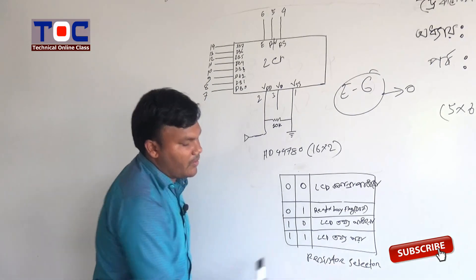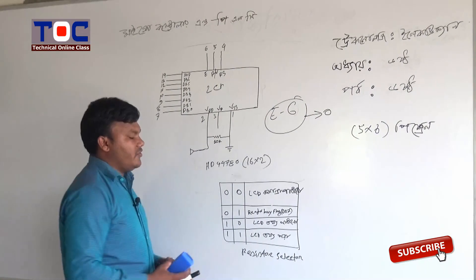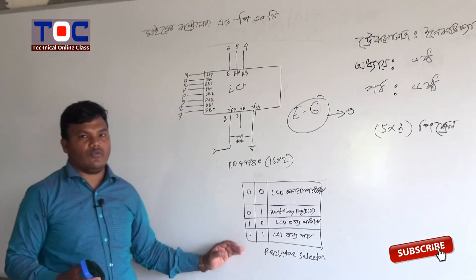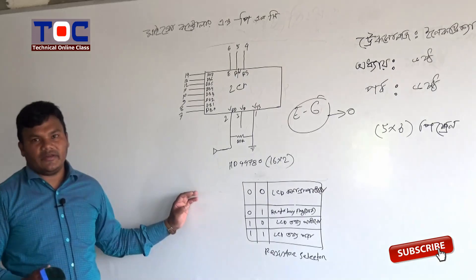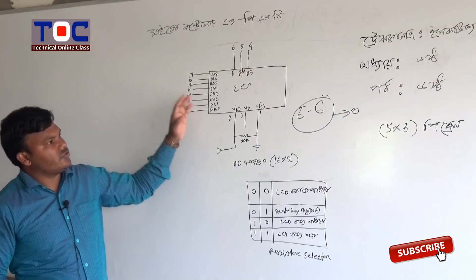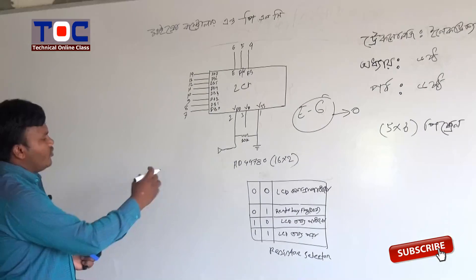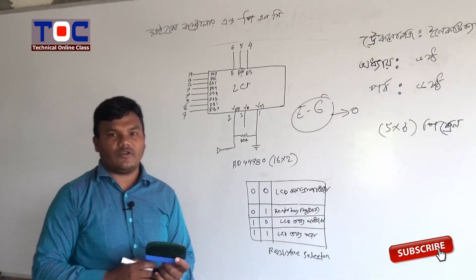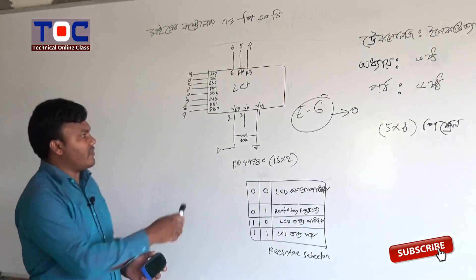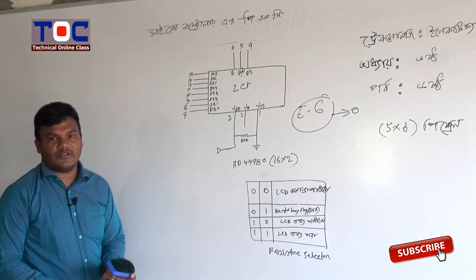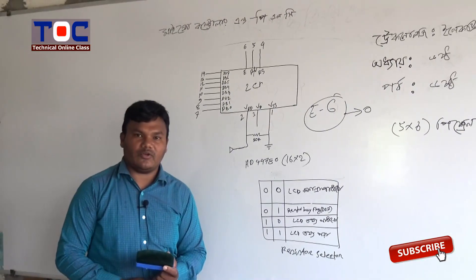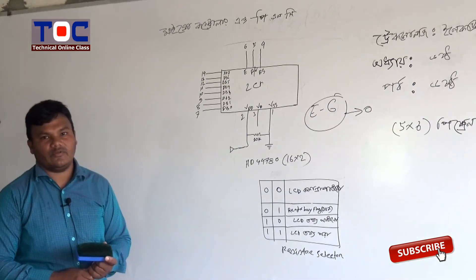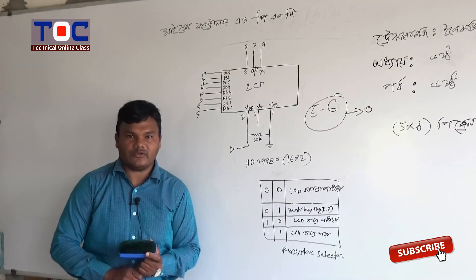The LCD data is ready to return. Now we need to use code — we need to apply the register select. Now our code will be needed. I will show you the program — this is program 6.3. I am going to show you the program of 6.3 — I will show you the program of 6.3.